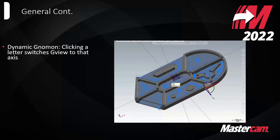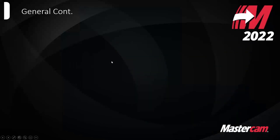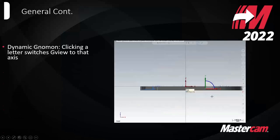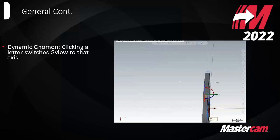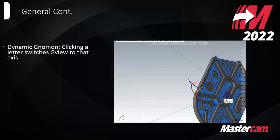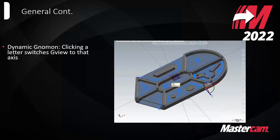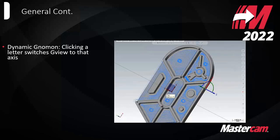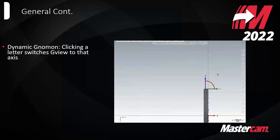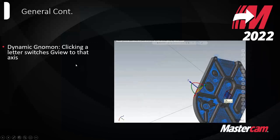Some more general improvements. If you click on the letter of the gnomon, it'll now make your G-view normal to that axis. So clicking on X, Y, or Z will immediately flip you normal to that axis. That was kind of dead space before on the dynamic gnomon, so it's nice seeing that added.